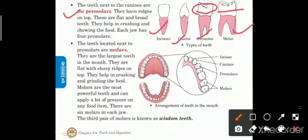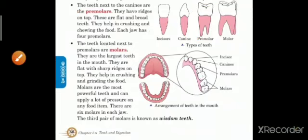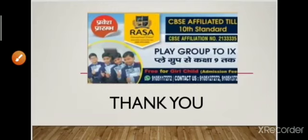Molars are the most powerful teeth and can apply a lot of pressure on any food item. Jo molars hote hain wo bahut powerful teeth hote hain aur ye bahut zyada pressure apply karte hain kisi bhi food item par. There are six molars in each jaw — upper jaw aur lower jaw dono mein. The third pair of molars is known as wisdom teeth, jise hum 'akal dhar' ya wisdom teeth kehte hain. Thank you so much for today, I hope you all are doing great.